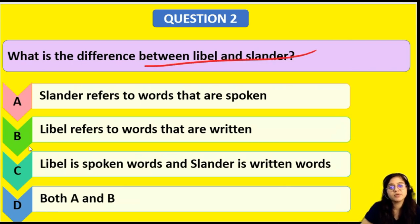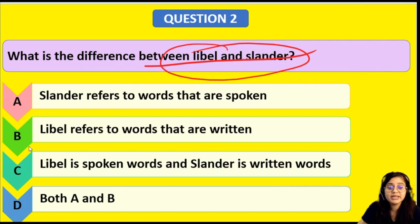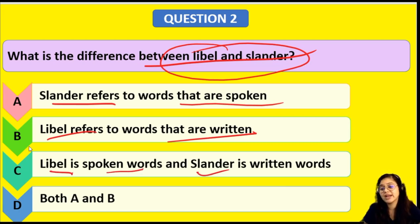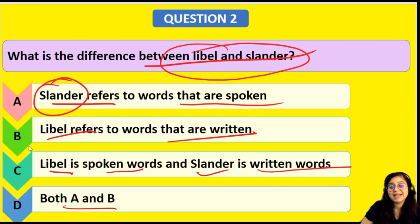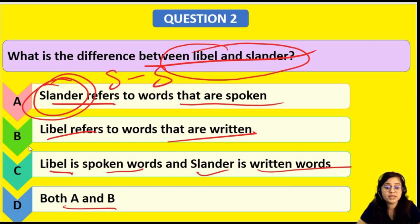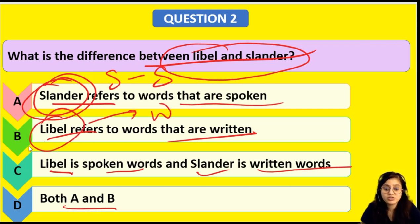Next question: What is the difference between libel and slander? Slander refers to words that are spoken. Libel refers to words that are written. Remember this — S for slander, S for spoken words. Slander means spoken words; you are insulting someone orally. Libel is when you are insulting someone in writing. Therefore, the answer is option D — both A and B.